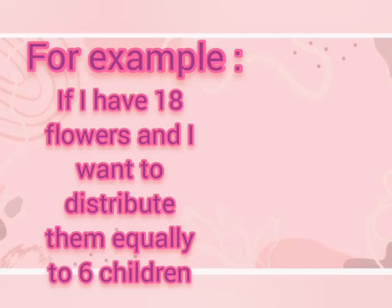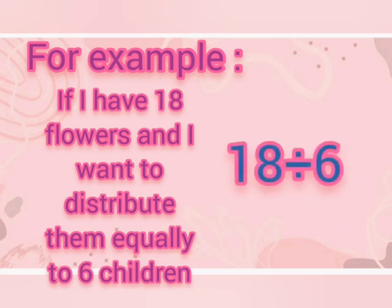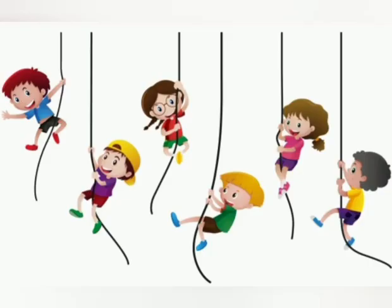For example, if I have 18 flowers and I want to distribute them equally to 6 children, I will distribute the 18 into 6 equal groups. And as we see here, there are 6 children, and I will give them the flowers equally.